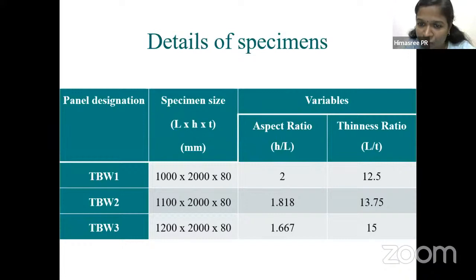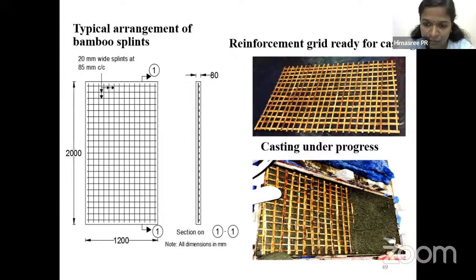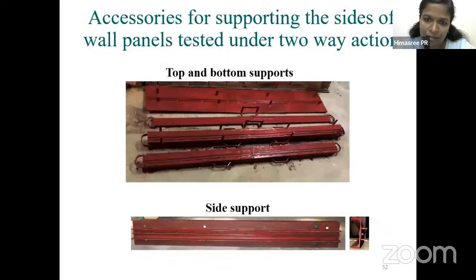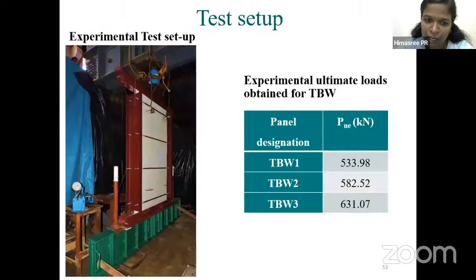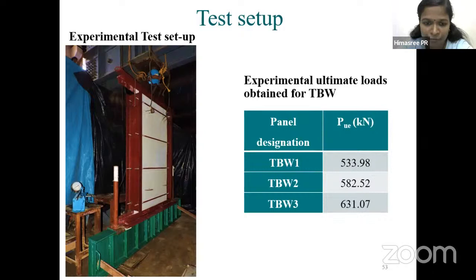The two-way wall panel was cast and the test setup included accessories to ensure machine support on all four sides. The panel was tightly held on all four sides. The load carrying capacity was around 630 kN. Even for the reduced size, approximately 630 kN load was achieved. Under two-way in-plane action, the panel bends in double curvature — biaxial bending — with cracks typically developing from corner to corner, and maximum deflection at the center.